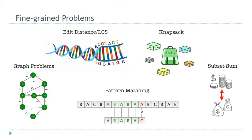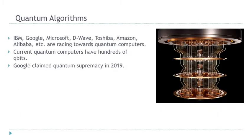Sometimes we can prove a lower bound; sometimes it turns out a better algorithm exists. In quantum complexity, we try to take advantage of quantum physics and improve algorithms in terms of runtime. It seems to be possible to make quantum computers in practice — right now Google, Microsoft, and many other companies are making quantum computers.